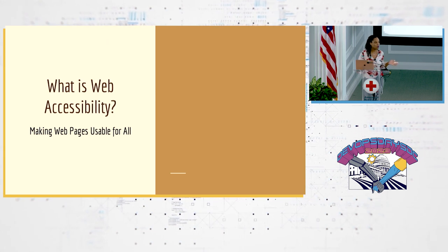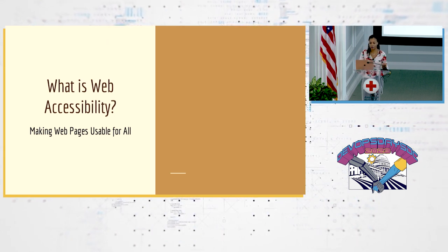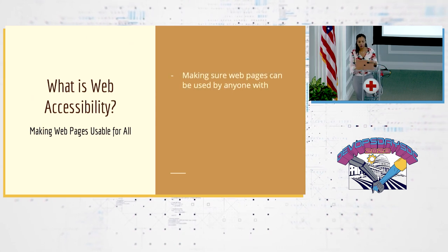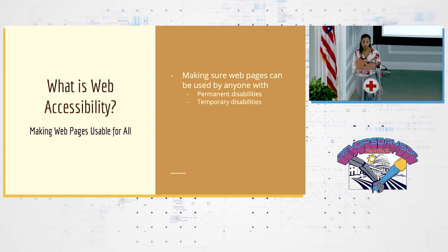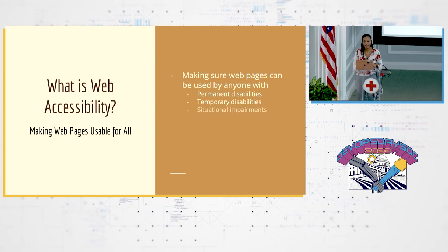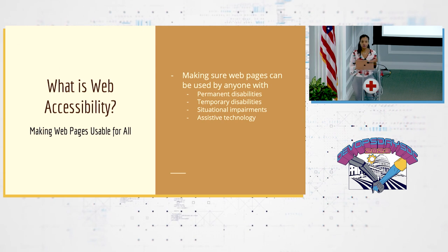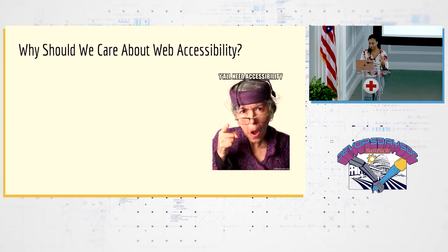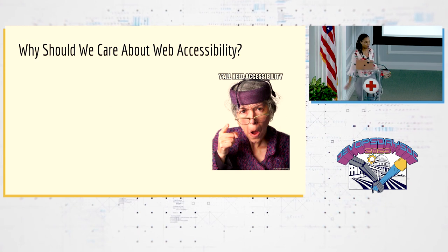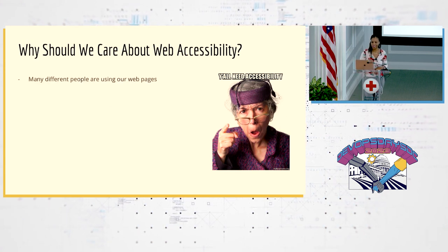Web accessibility is making web pages usable for everyone, including people with disabilities. We want to make sure our pages can be used by people with permanent disabilities, temporary disabilities — like people who've had an accident — and people with situational impairments. We also want to make sure whatever software or website we're building can be used with assistive technology.